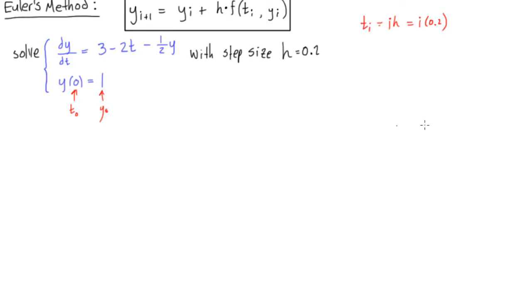All right, so all we need to do is just start solving. Let's say, let's go up to y3, we can keep going with this, but let's solve up to y3. So we will have y1 is going to be equal to y naught plus h times f of t naught and y naught.